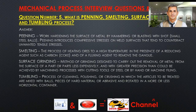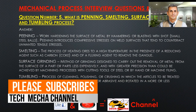Question number 5. What is peening, smelting, surface grinding, and tumbling process? Answer. Peening: work hardening the surface of metal by hammering or blasting with shot — small steel balls. Peening introduces compressive stresses on weld surfaces that tend to counteract unwanted tensile stresses.